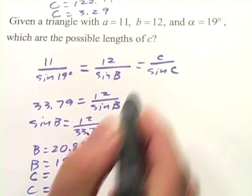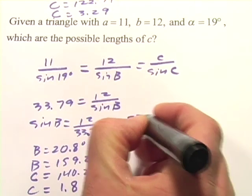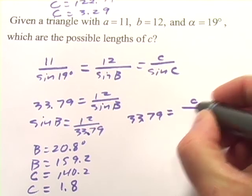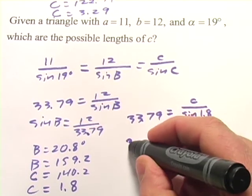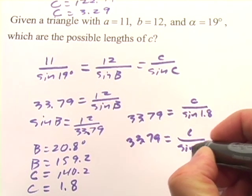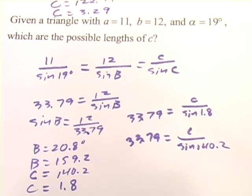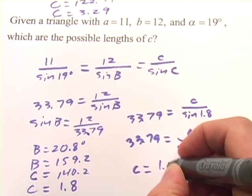Now we can use these angles in this ratio. And so we'll set 33.79 equal to C over the sine of 1.8, and 33.79 equal to C over the sine of 140.2. And we'll solve for C. And that would give us a value of C of 1.06.